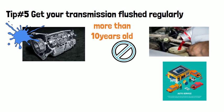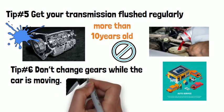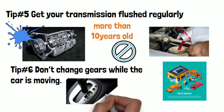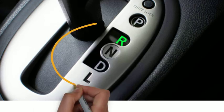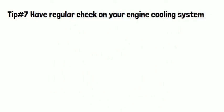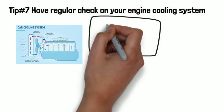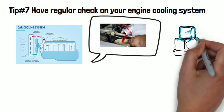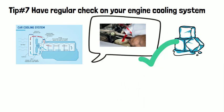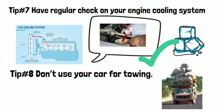Tip number six: don't change gears while the car is moving — be gentle and patient when shifting. Many incidents happen when shifting from drive to reverse as the buttons are close to each other. Tip number seven: have regular checks on your engine cooling system, which also ensures the transmission fluid pumping through the gearbox stays cool so the transmission doesn't overheat. Tip number eight: don't use your car for excessive towing, as overloading will cause the transmission fluid to oxidize or burn, causing significant damage.